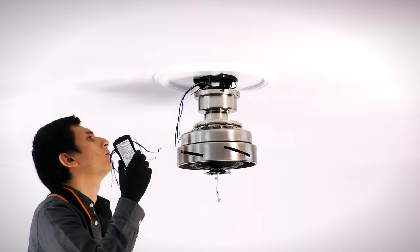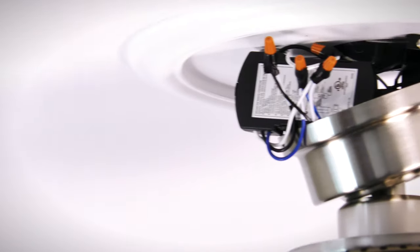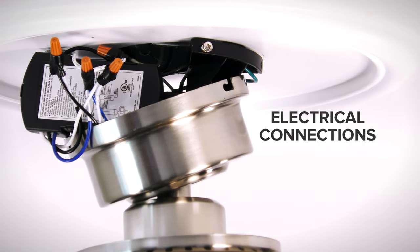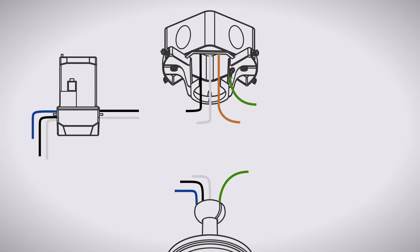Bring the receiver up to the ceiling box. Now you can make the electrical connections. Use wire nuts to connect the ground wires from the downrod, hanger bracket, and ceiling box together.